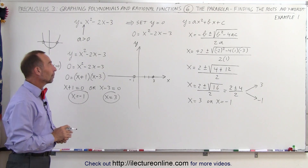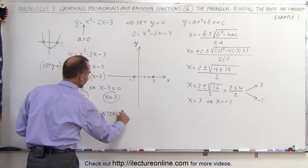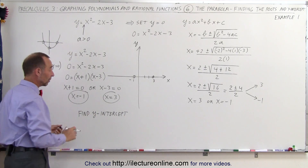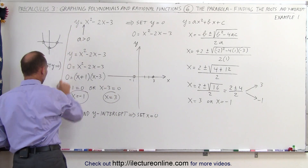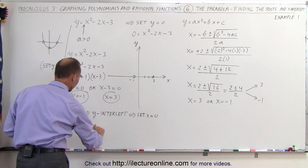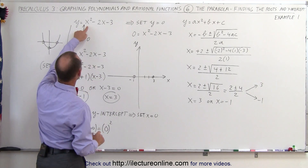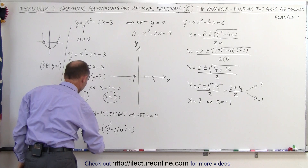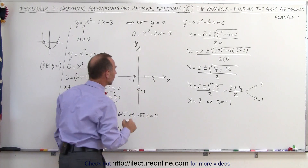The last thing we're going to do is find the y-intercept. To find the y-intercept, we must set x equal to 0. Notice where the parabola crosses the y-axis — that's where x is equal to 0. So we take our original equation and plug in 0 for every x: y equals 0 squared minus 2 times 0 minus 3. Therefore, y when x equals 0 is equal to negative 3. That means the graph crosses the y-axis at negative 3.